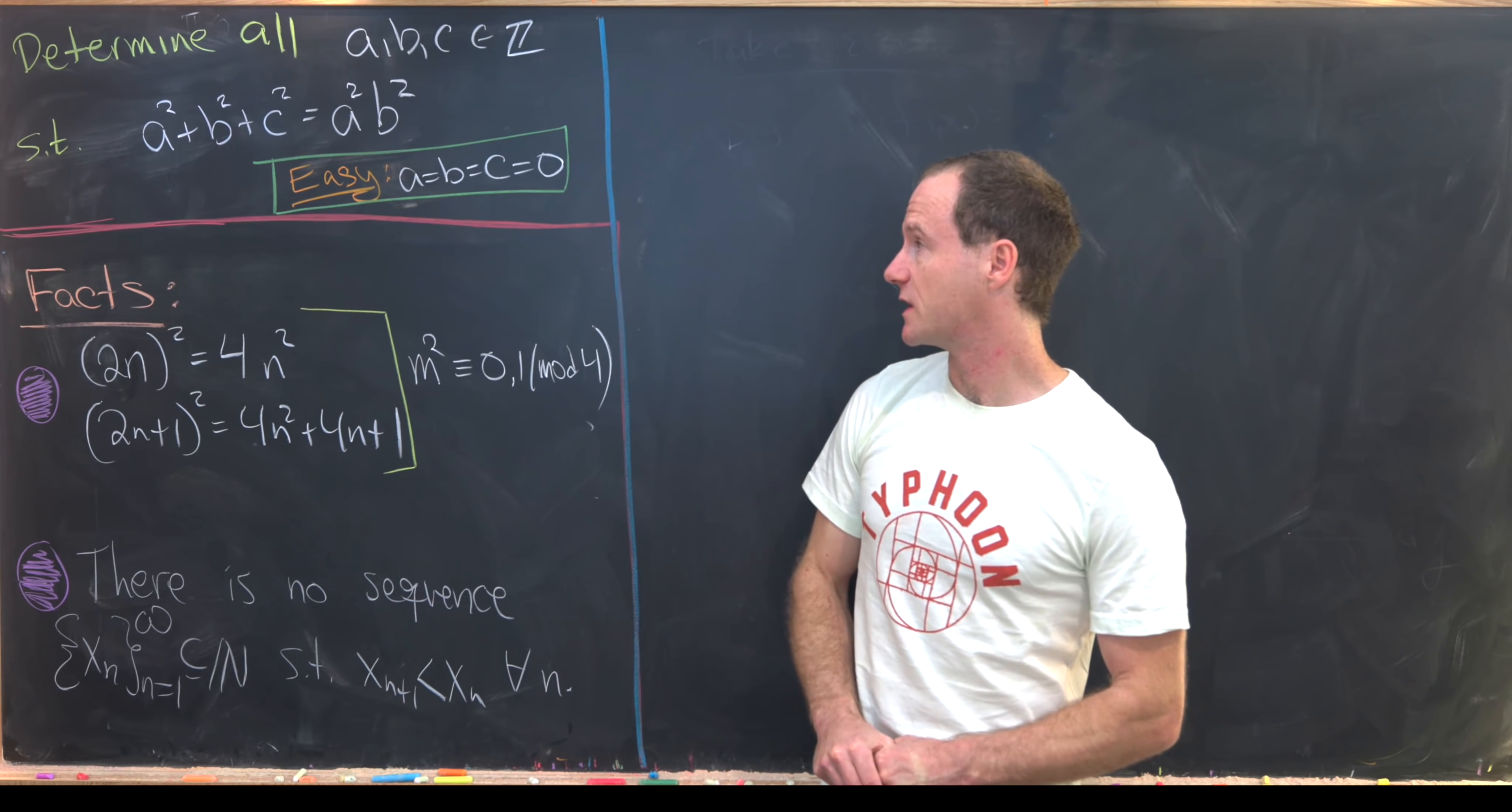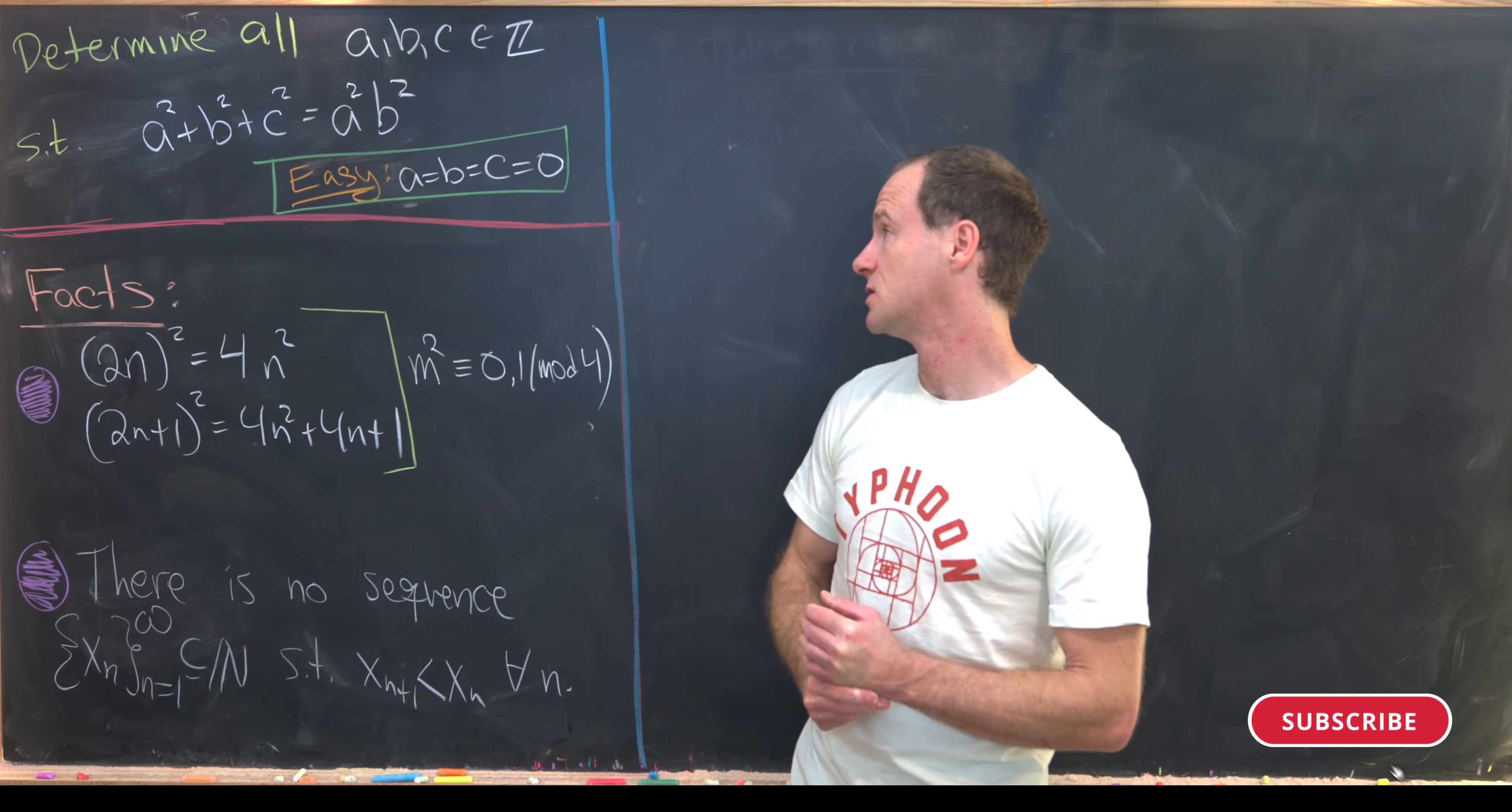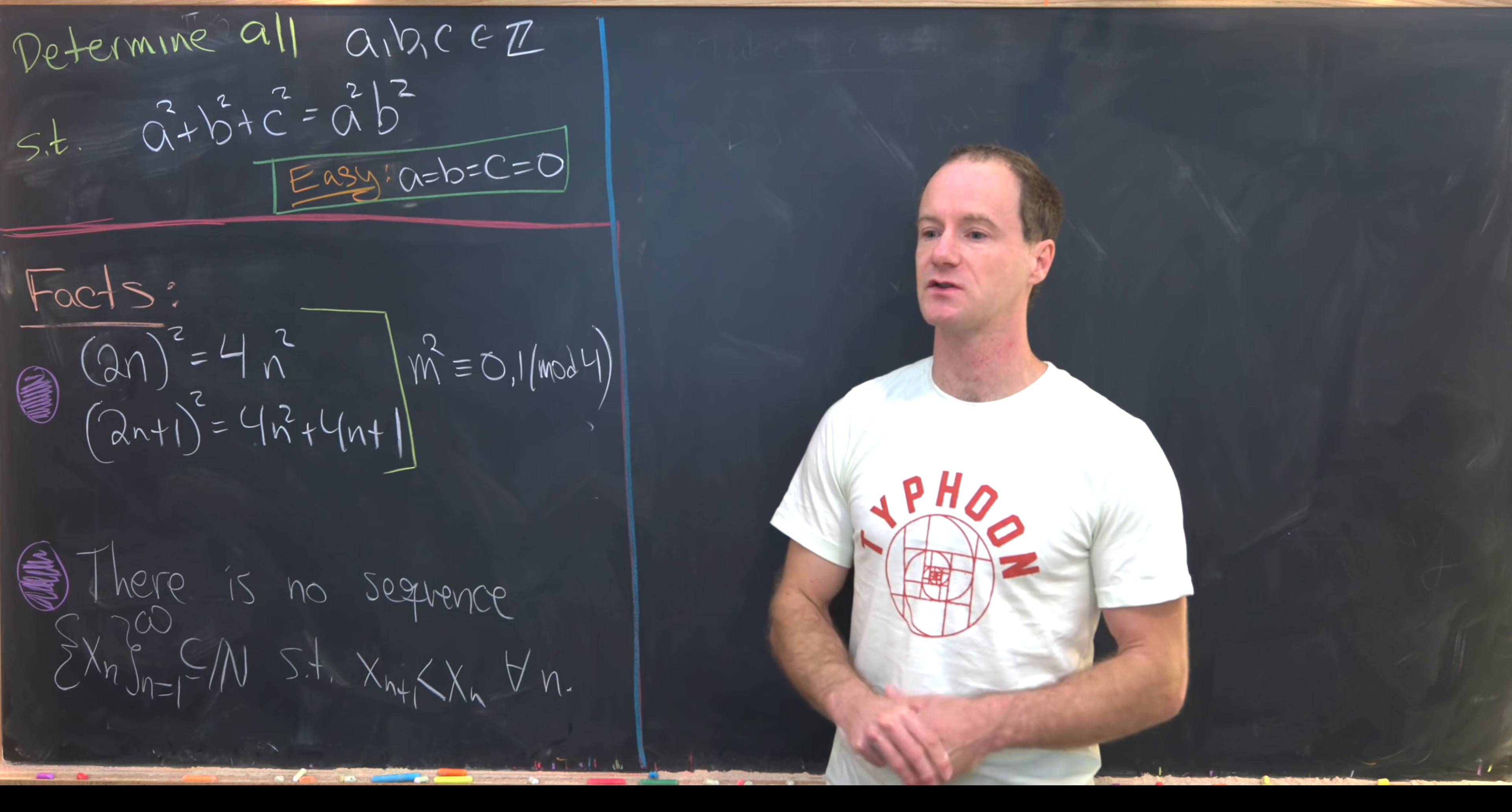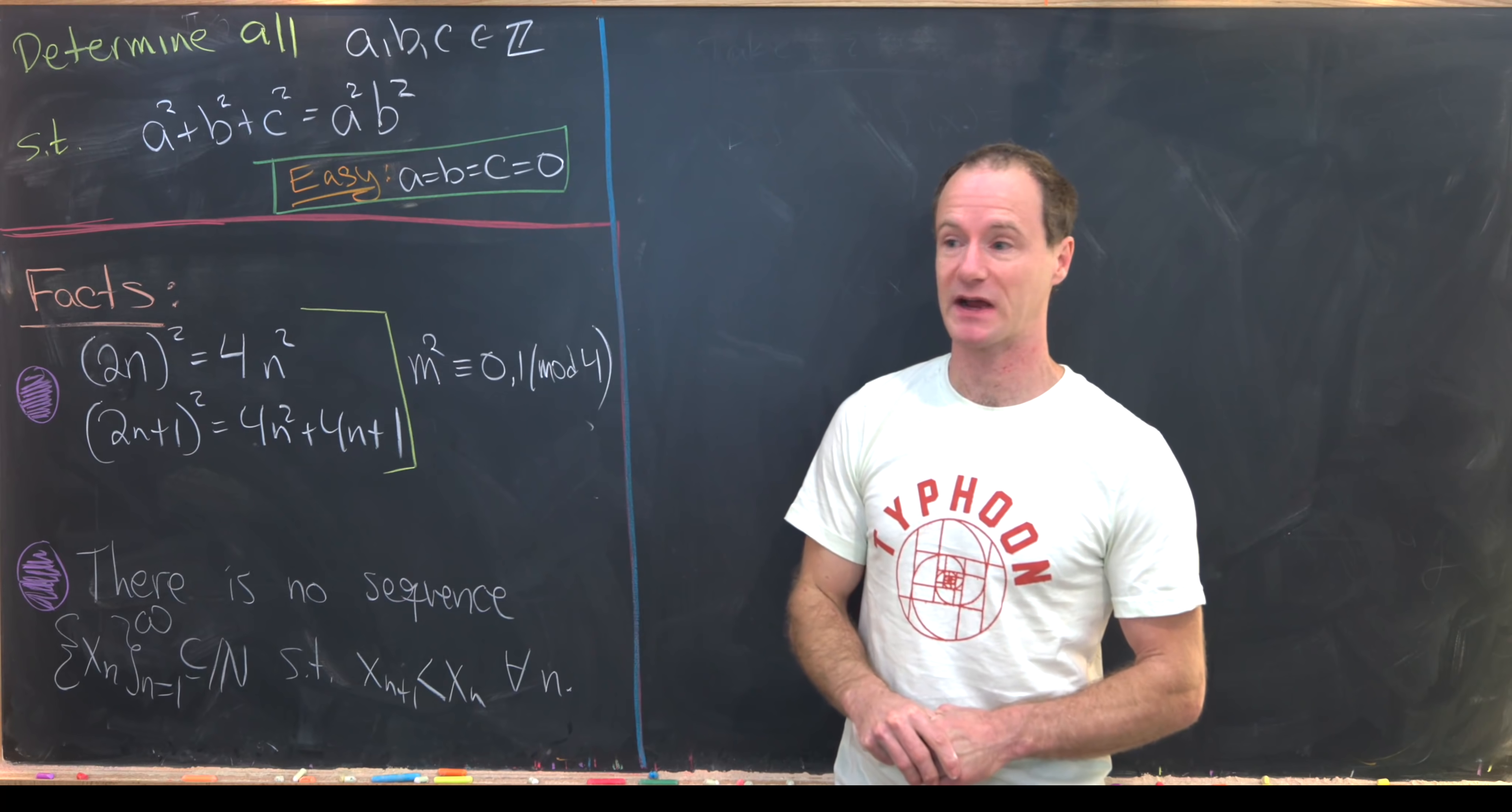Before we get started, I want to note that there is a very clear and easy solution, which is a = b = c = 0. We'll consider only solutions that are not of that form because we get that one almost for free just by inspection.